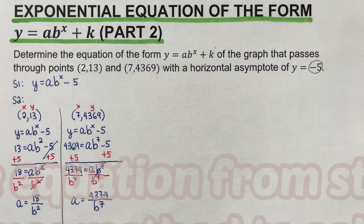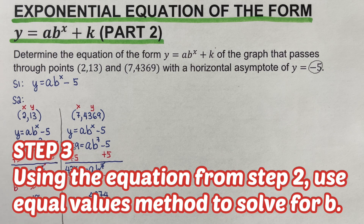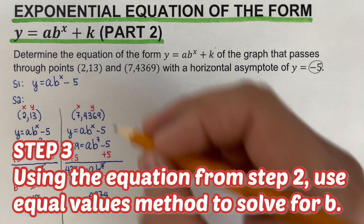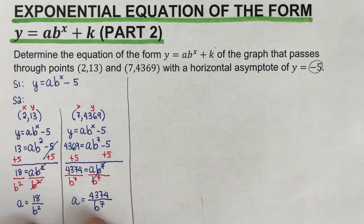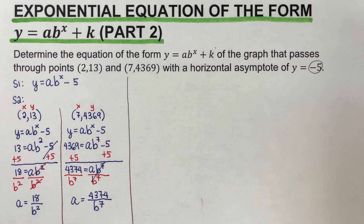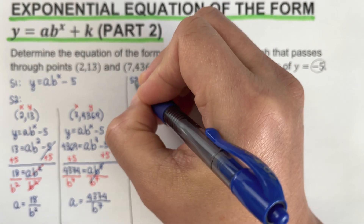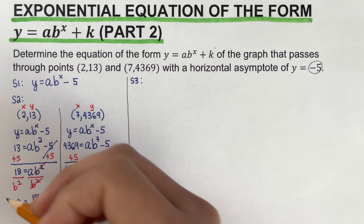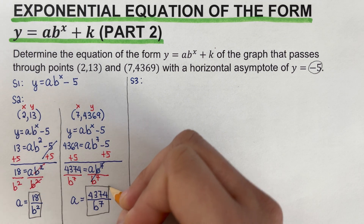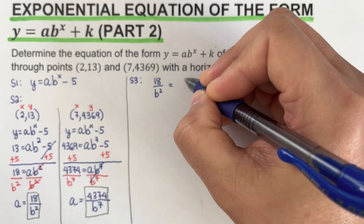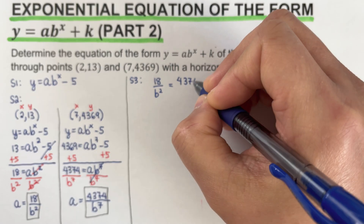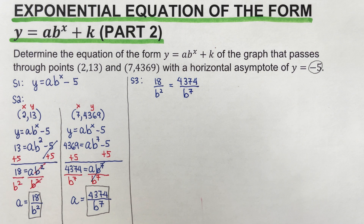Step three: using the equations from step two, use the equal values method to solve for b. Since both equations are equal to a, we can set them equal to each other: 18 / b² = 4374 / b⁷. That is based on the equal values method — since both are equal to a, these two expressions are also equal to each other.